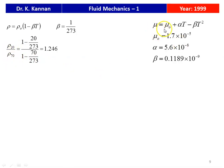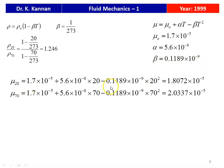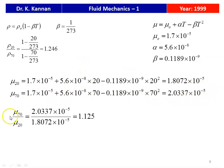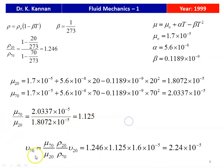For absolute viscosity, μ = μ₀ + αT − βT², where μ₀ = 1.7×10⁻⁵, α = 5.6×10⁻⁸, β = 0.1189×10⁻⁹. Calculating: μ₂₀ = 1.8072×10⁻⁵ and μ₇₀ = 2.0337×10⁻⁵, giving μ₇₀/μ₂₀ = 1.125. The kinematic viscosity ν₇₀ = (μ₇₀/μ₂₀) × (ρ₂₀/ρ₇₀) × ν₂₀ = 1.125 × 1.246 × 1.6×10⁻⁵ = 2.24×10⁻⁵ m²/s.